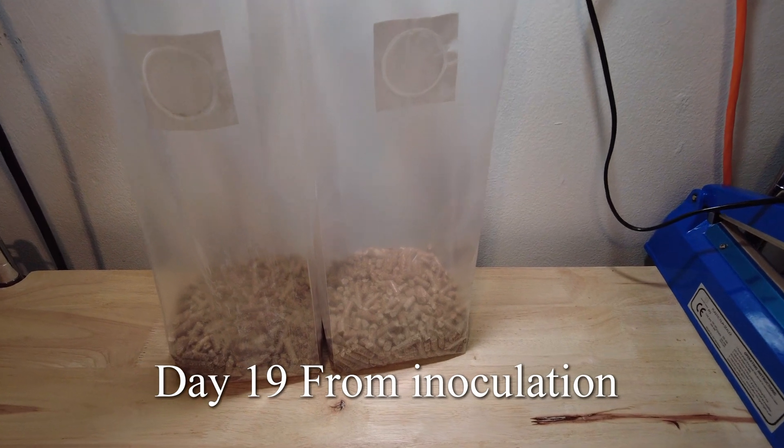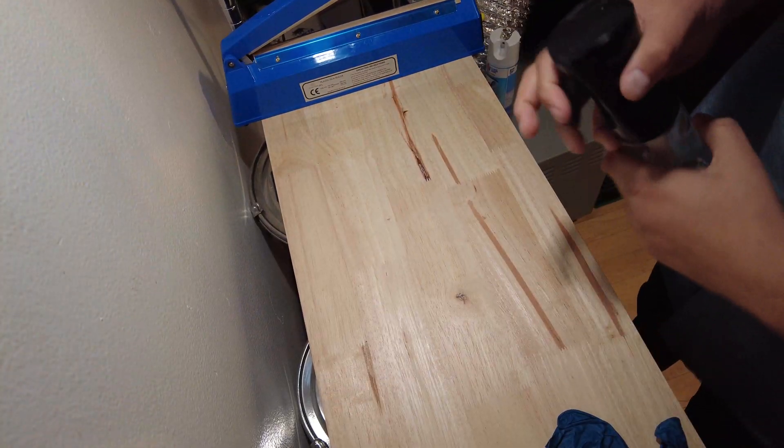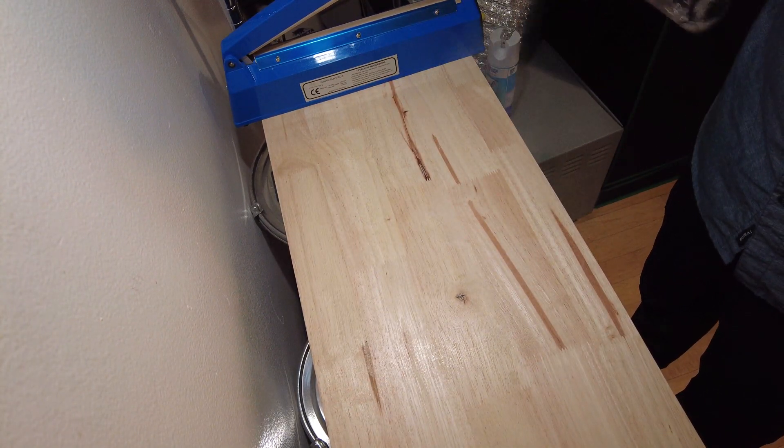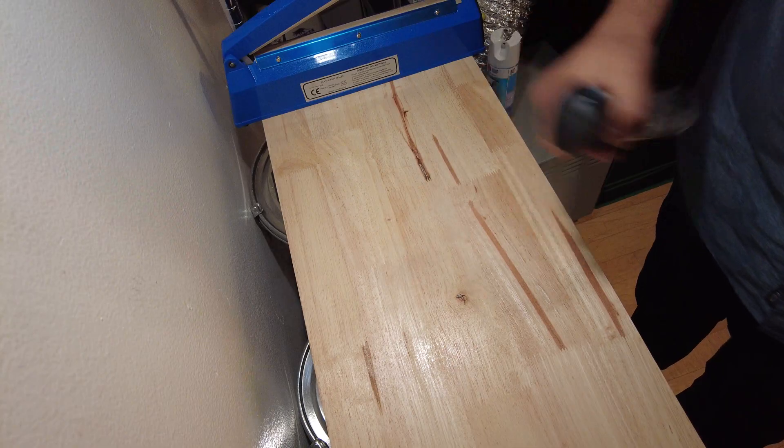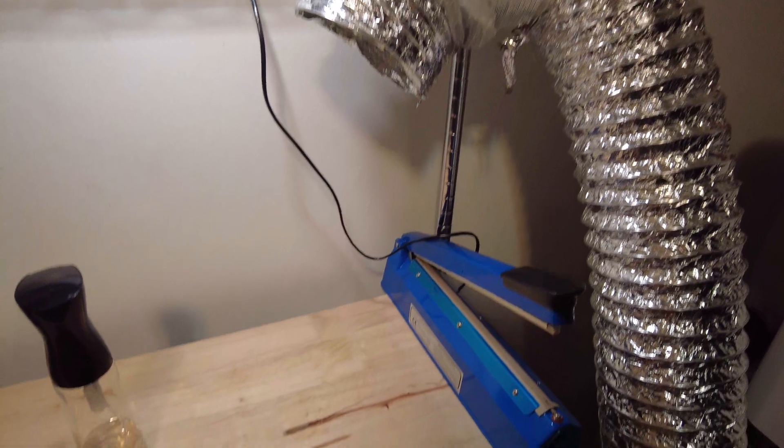Day number 19. Today I'm going to try to inoculate the grow medium with the Uncle Ben's rice. But before I do that, I'm going to disinfect everything with alcohol to try to prevent contamination. I pulled the duct filter out of my tent and I hung it over my work table. I'm hoping this acts like a laminar flow hood.